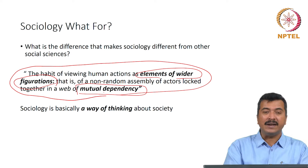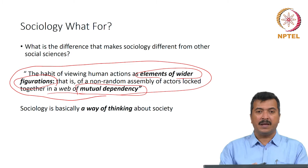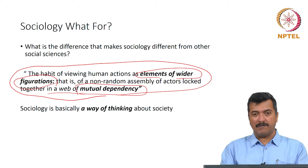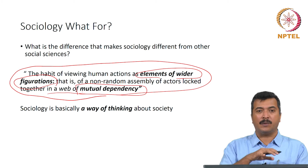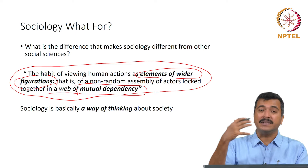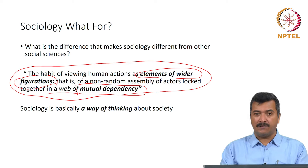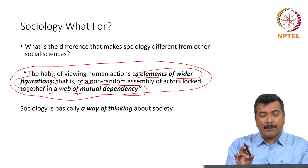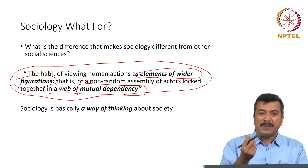That is, of a non-random assembly of actors locked together in a web of mutual dependency. This web of mutual dependency is a defining character of a society — we are all entangled in it. Our actions make sense and we are able to act in a particular manner only because there are thick layers of social interactions which provide a kind of mutual dependency. We are able to act in a society only when our actions are understood and reciprocated by others; otherwise we would be acting in isolation. This particular capacity of looking at human interaction and its specific forms of mutual dependency is what Bauman argues is the very essential feature of sociological thinking.